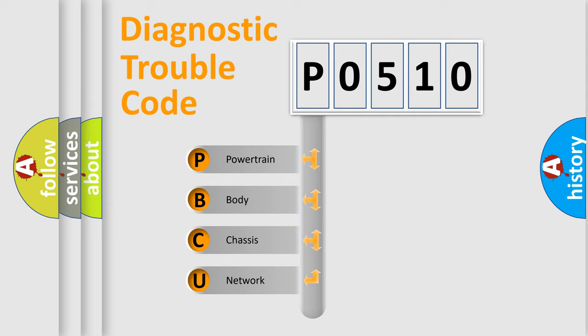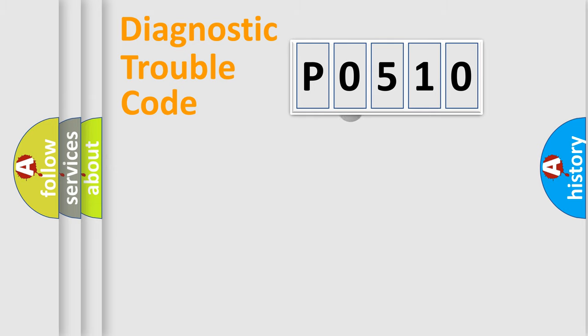We divide the electric system of automobile into four basic units: Powertrain, body, chassis, and network. This distribution is defined in the first character code.